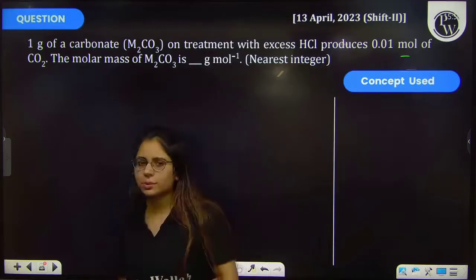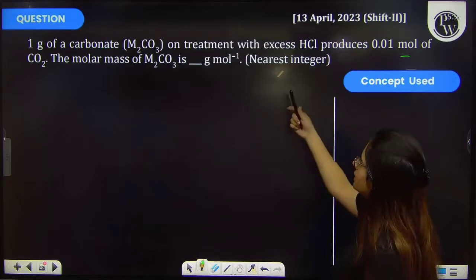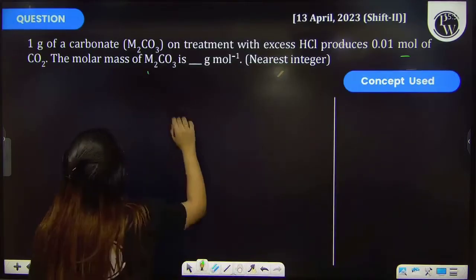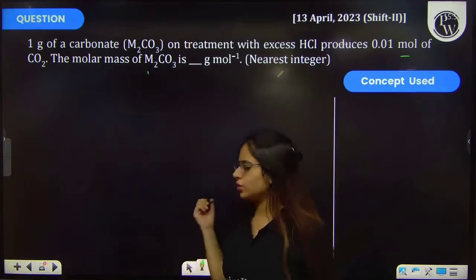So what is given in the question? A carbonate, that is M₂CO₃, is reacting with hydrochloric acid and it is forming MCl. What do we want to find? The molar mass of M₂CO₃.